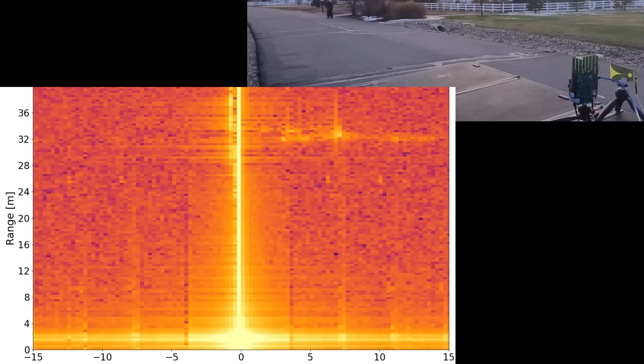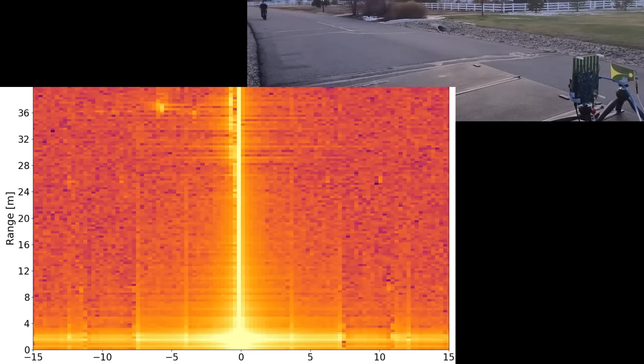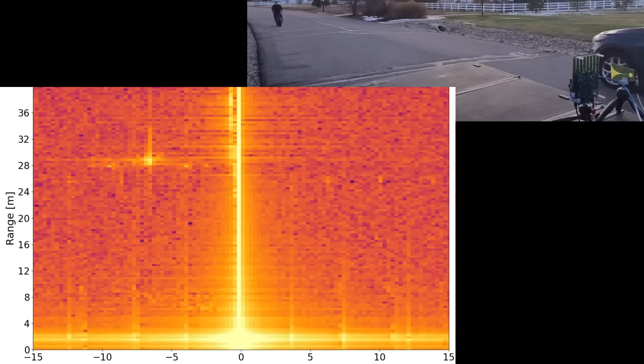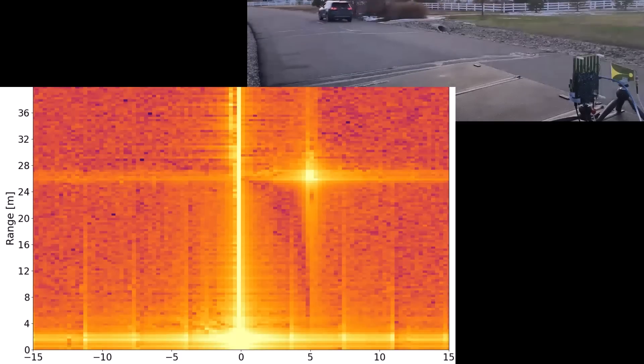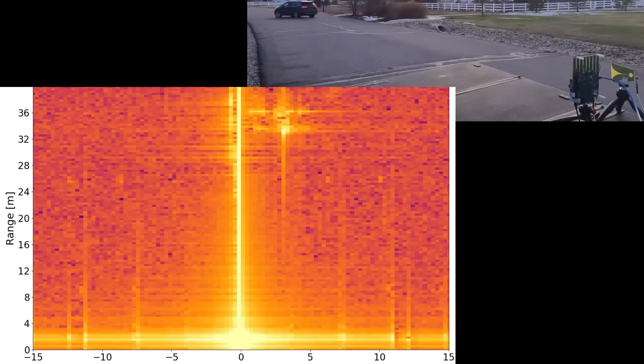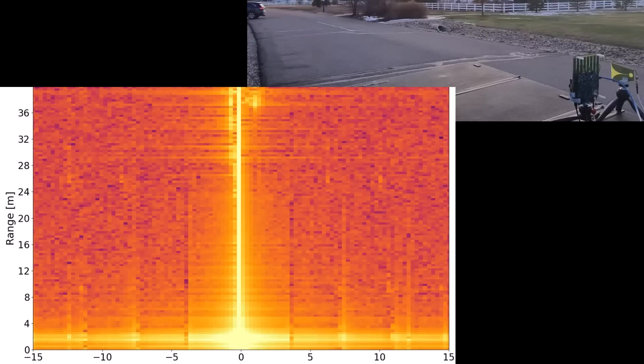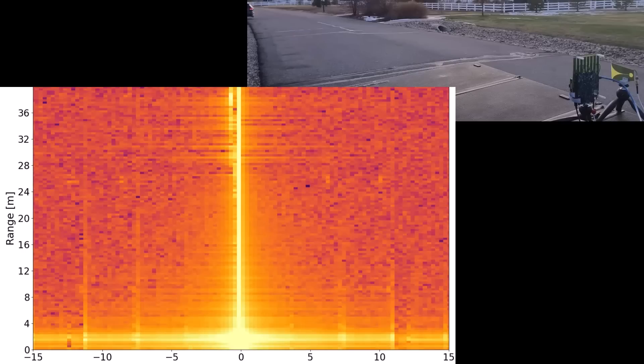We could try to filter this out. Or sometimes we'll put a notch filter around 0 meters per second to just delete all of that. And when I show this plot with the drone target, I'll put that notch in so that you can see what that looks like. But for this plot, I wanted to leave all the ground clutter in there so that you could see the raw processing of the range Doppler 2-dimensional FFT.